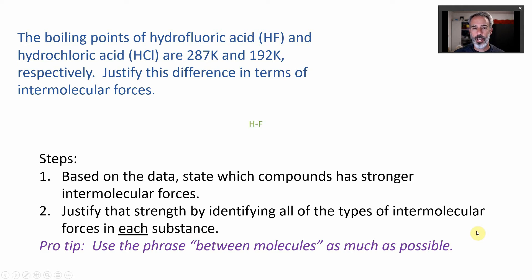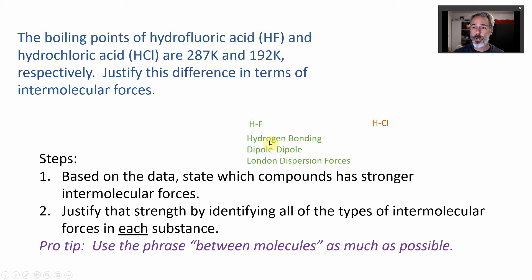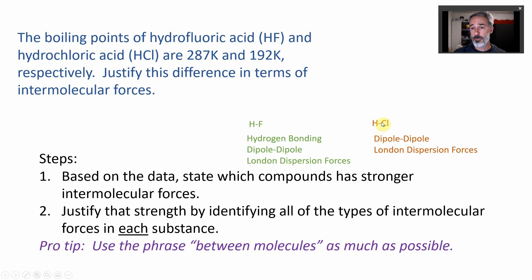Let's look at an example. HF — because it has a fluorine and a hydrogen and a lone pair — can definitely do hydrogen bonding. Anything that can do hydrogen bonding is polar, and therefore can do dipole-dipole interactions. And everything with electrons can do London dispersion forces. For HCl, the intermolecular forces are dipole-dipole forces because it's polar — the dipole pulls towards chlorine — and of course it can do London dispersion forces.